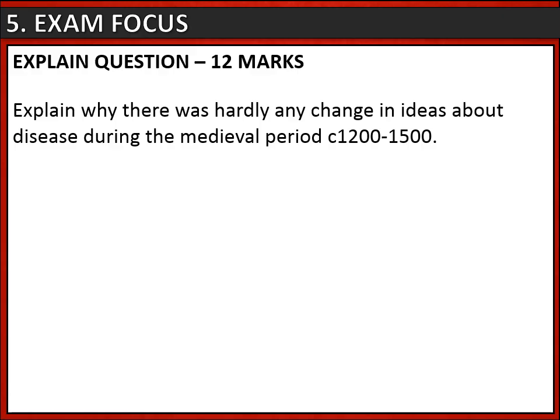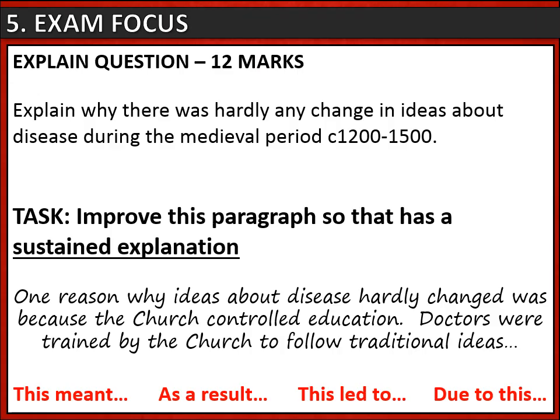Now some exam technique practice. Here's a typical explain question worth 12 marks: 'Explain why there was hardly any change in ideas about disease during the medieval period 1200 to 1500.' Notice we're only interested here in ideas about disease, not treatments or preventions. For a question like this, you need to explain three reasons, each in a paragraph of its own. Here's the start of a paragraph about how the church controlled education. Pause the video now and have a practice at turning this into a sustained explanation — string together two or three explaining phrases to make a really developed, sustained explanation.